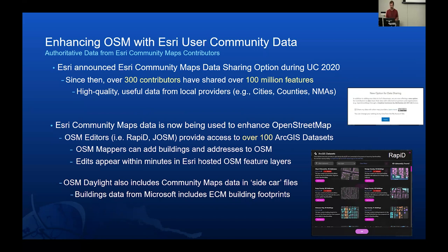I don't think I have time for a live demo, but the screenshot gives you a bit of an idea — you may have seen some of it in Ben and Brian's talk earlier. Basically, we have a separate interface reading all these layers out of ArcGIS Online. You can just add them to the editing environment in Rapid and start pulling features across into OSM.